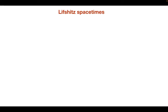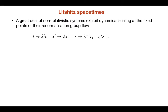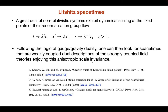Let's start with Lifshitz spacetimes. A great deal of non-relativistic systems exhibit this dynamical scaling. By dynamical scaling, what I mean is that time and spatial parts of the metric and spacetime do not scale the same. For example, for z greater than one, time and spatial parts scale differently.